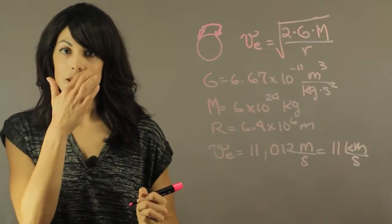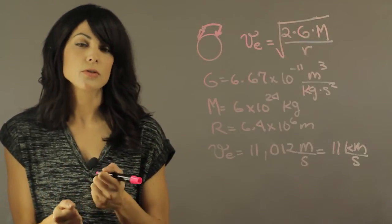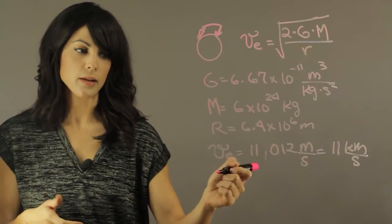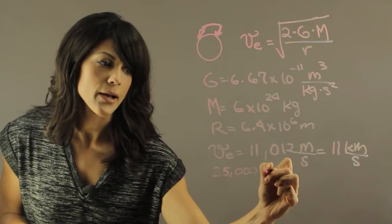That means that for things to escape the Earth's gravitational field, you have to shoot them at least at 11 kilometers per second. This is about 25,000 miles per hour.